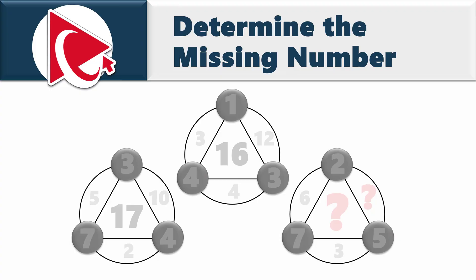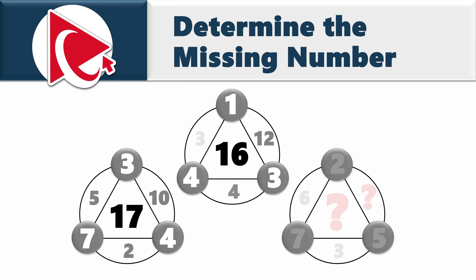You're presented with unusually looking shapes that have numbers inside. The middle number in the first shape is 17. Numbers in the small circle are 4, 7, and 3, and numbers inside the large circle are 10, 2, and 5. In the second shape, the middle number is 16. The numbers in the small circle are 3, 4, and 1, and the numbers inside the large circle are 12, 4, and 3.